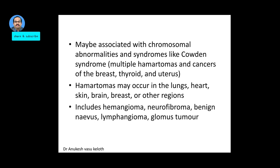Hamartomas can occur at any site, especially the lungs, heart, skin, brain, breast, or other sites. Some common examples include the hemangioma, neurofibroma, nevus, lymphangioma, and glomus tumour.